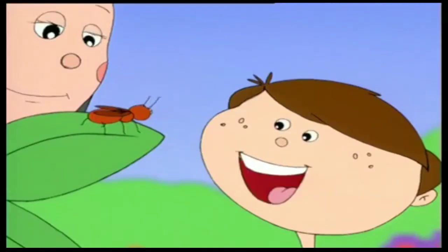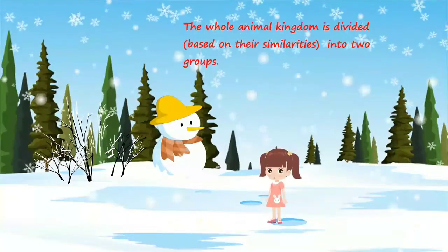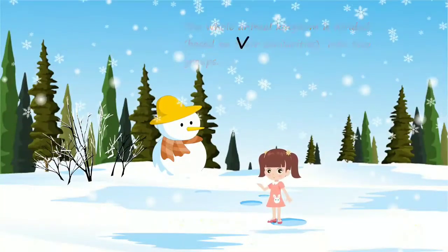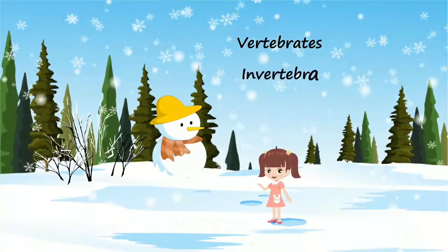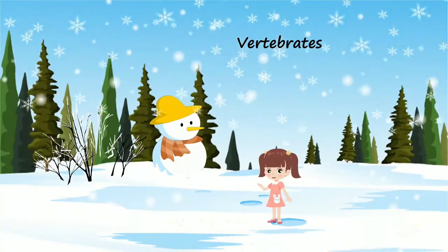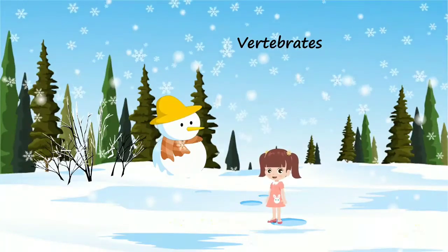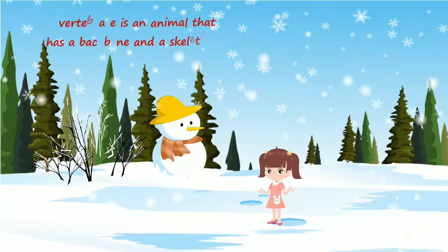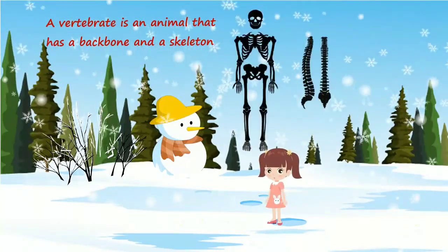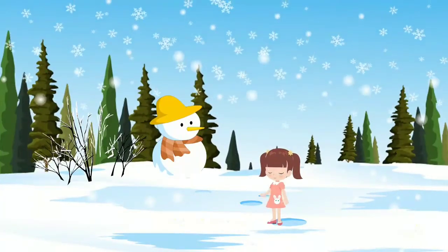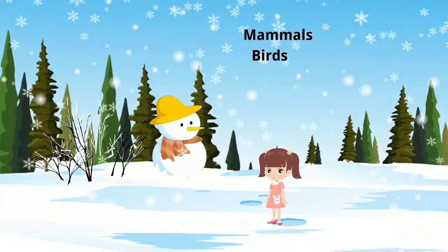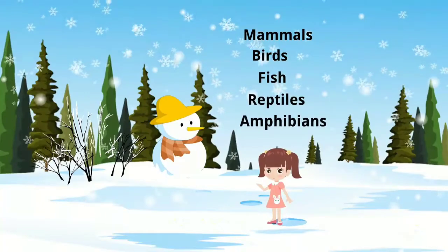The whole animal kingdom is divided into two groups: vertebrates and invertebrates. In this video, we are going to talk about vertebrates. A vertebrate is an animal that has a backbone and a skeleton. Vertebrates have five classes: mammals, birds, fish, reptiles, and amphibians.